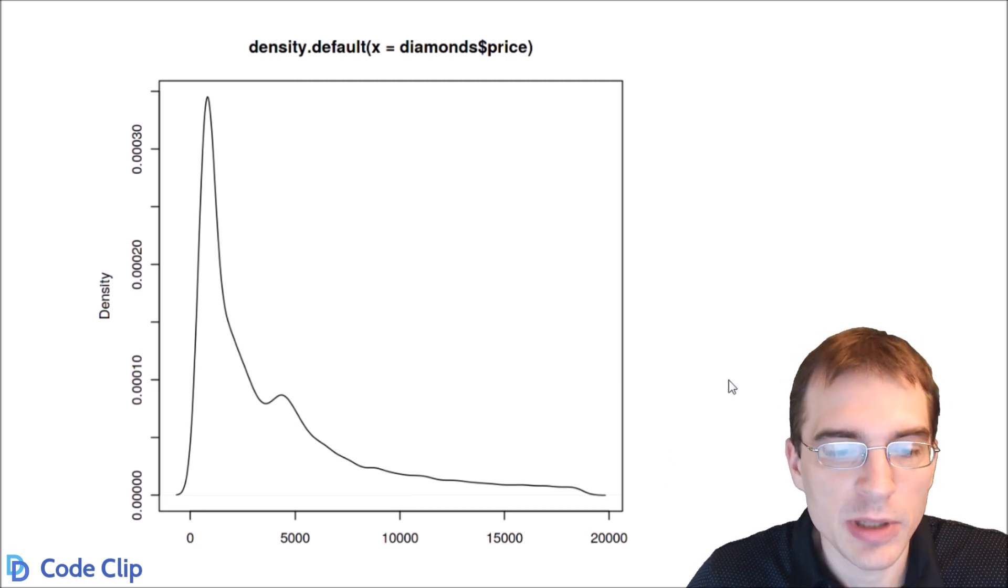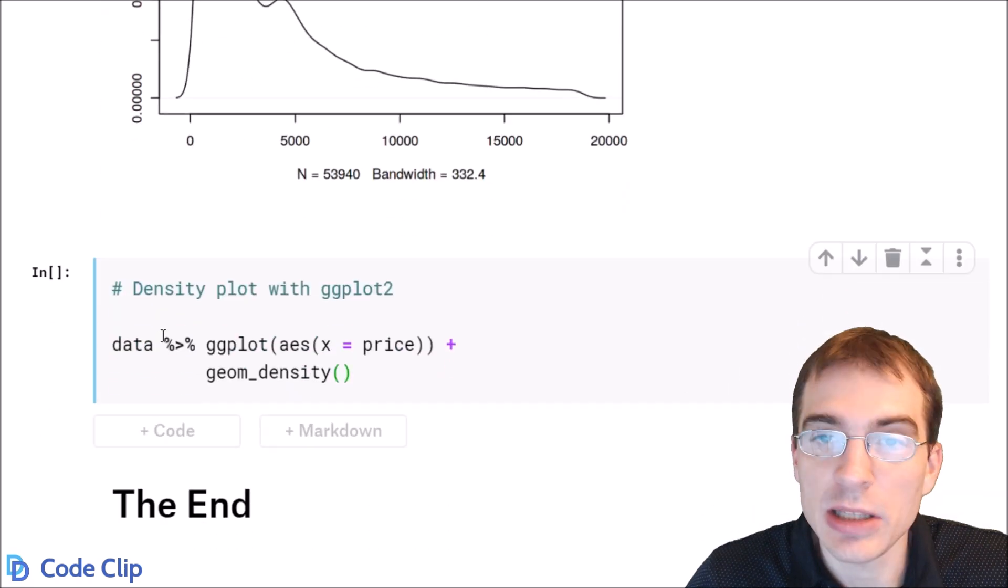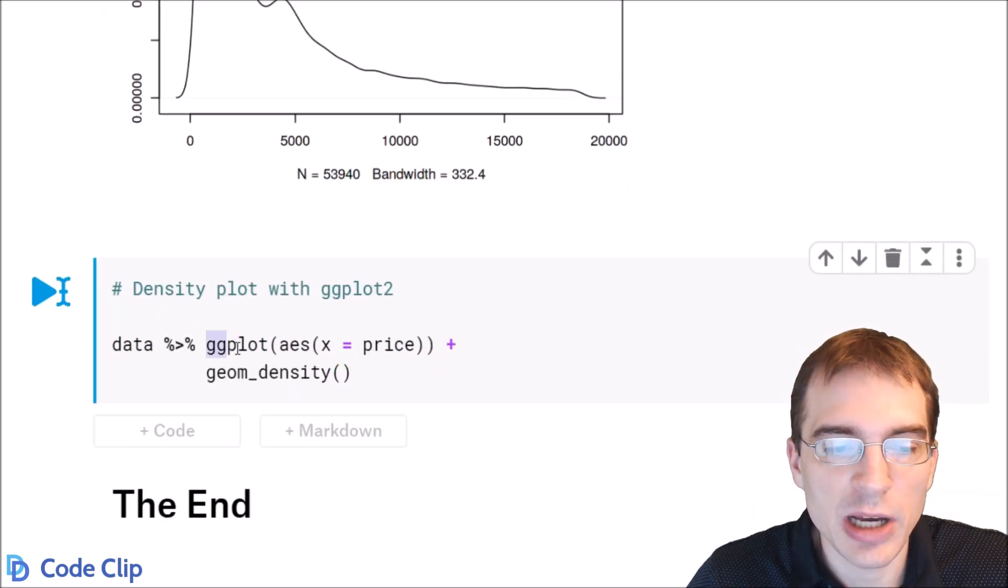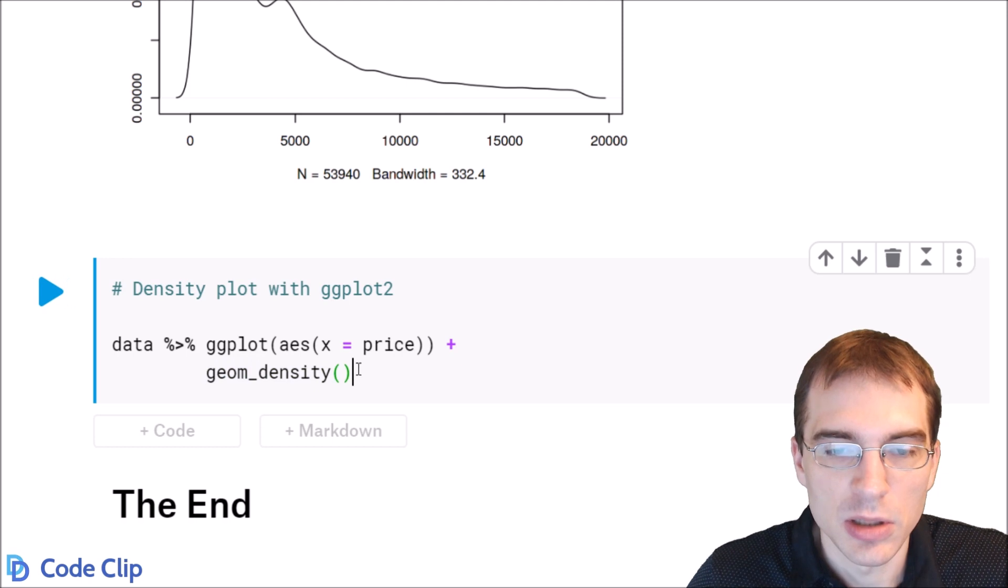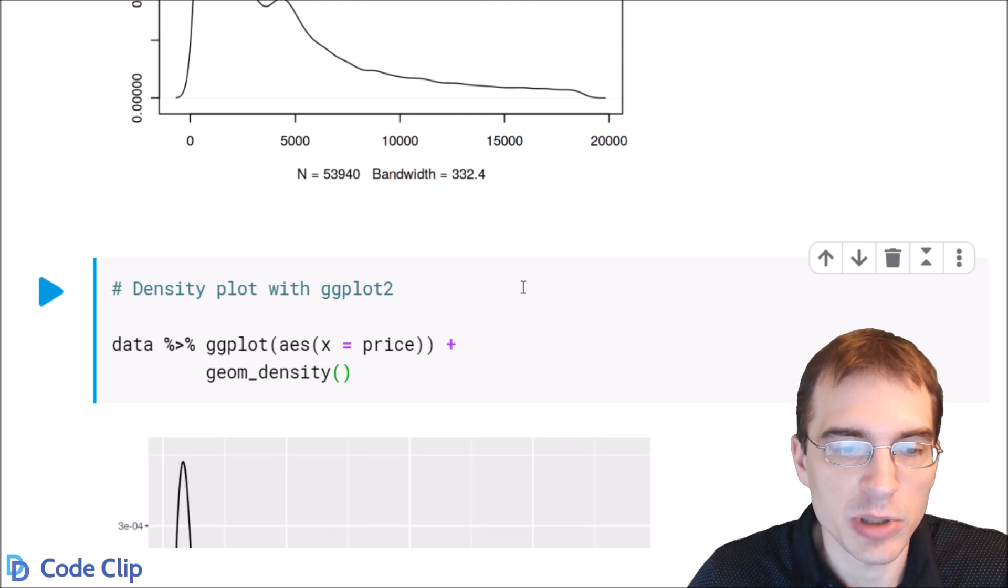To do the same thing in ggplot2, we can take the data, pipe it to the ggplot function. We only need to pass in one thing to the aesthetics because it only requires one variable. For the aesthetics, we're going to say x equals price. We're going to make the same plot essentially as above, and then we just have to add our geometry. In this case, we do plus and we want the geom_density. This will create essentially the same plot as above.